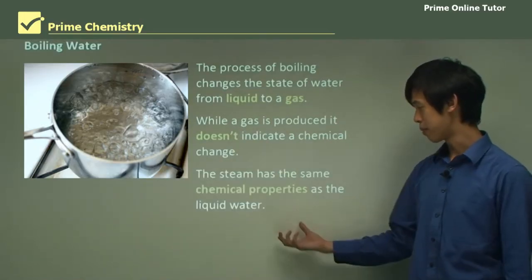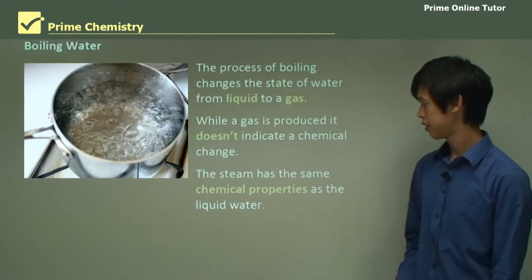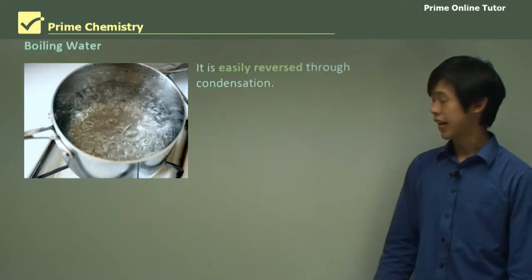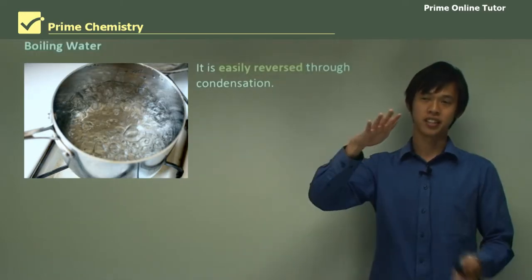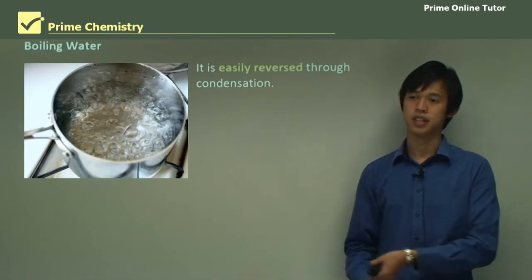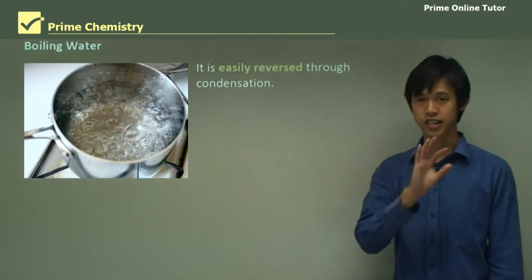The steam has the same chemical properties as the liquid water, so it's not a chemical change. And it's easily reversed. I can easily turn steam back into water if I let the steam hit a cold surface, like a plate or something. I can condense it really easily.